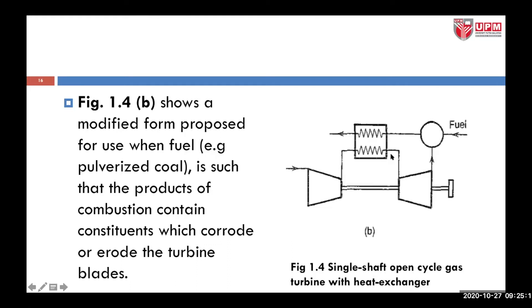In this arrangement, the products of combustion contain constituents which corrode or erode the turbine blades. However, the turbine blades are less prone to corrosion because the combustion process takes place right after the turbine stages, compared to the arrangement in figure 1.4A.